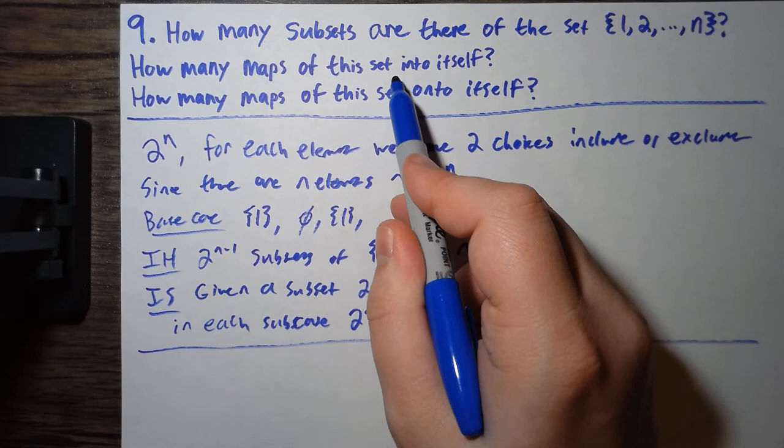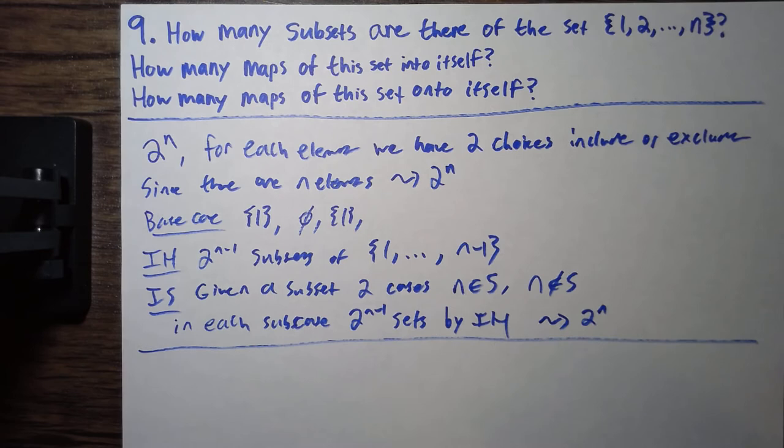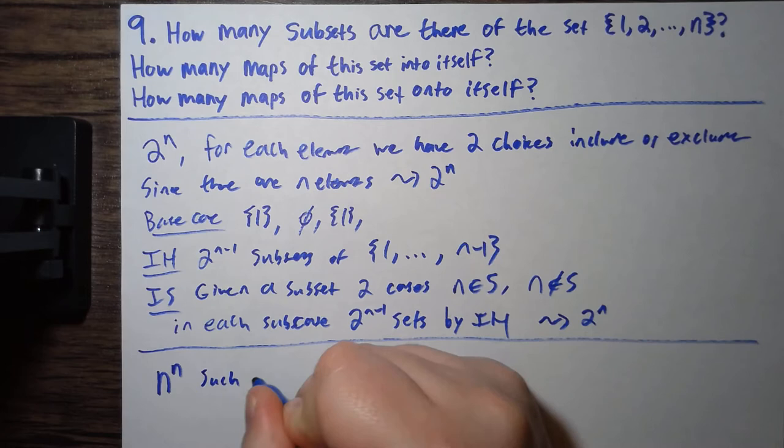How many maps of this set into itself? So, for this one, there's going to be... Well, the idea is, for every element 1, 2, all the way to n, we need to assign an element 1, 2, all the way to n. So, there's going to be n to the n such maps.